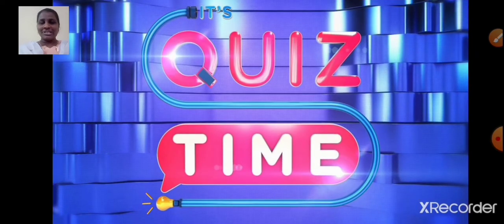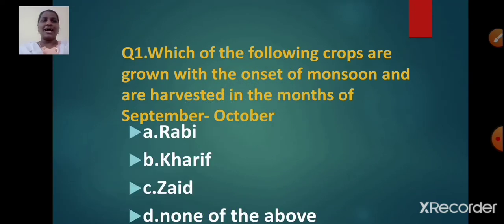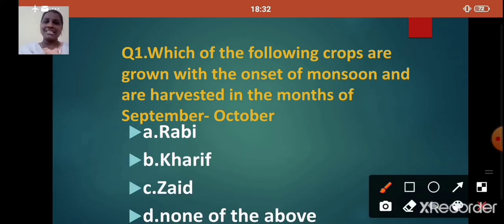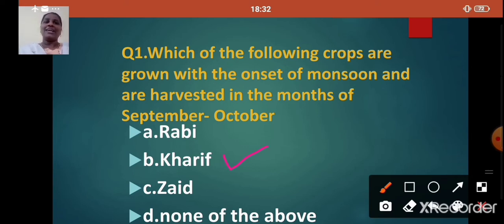Now it is time for a quiz. Which of the following crops are grown with the onset of monsoon and are harvested in the months of September-October? The correct answer is option B: Kharif. Kharif crops are grown with the onset of monsoon and are harvested in the months of September-October.